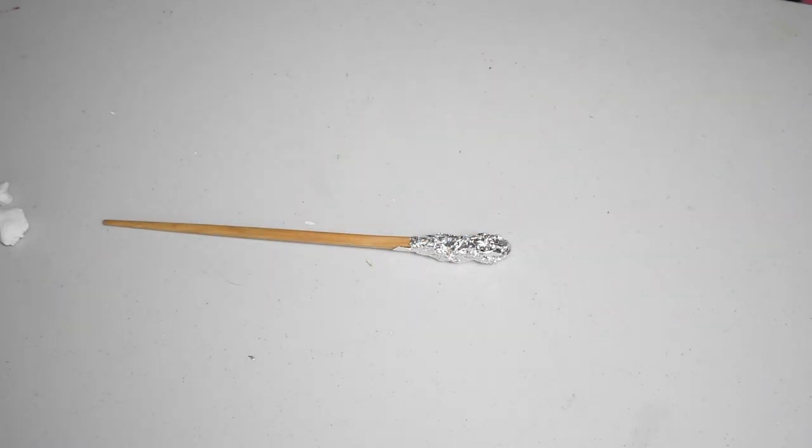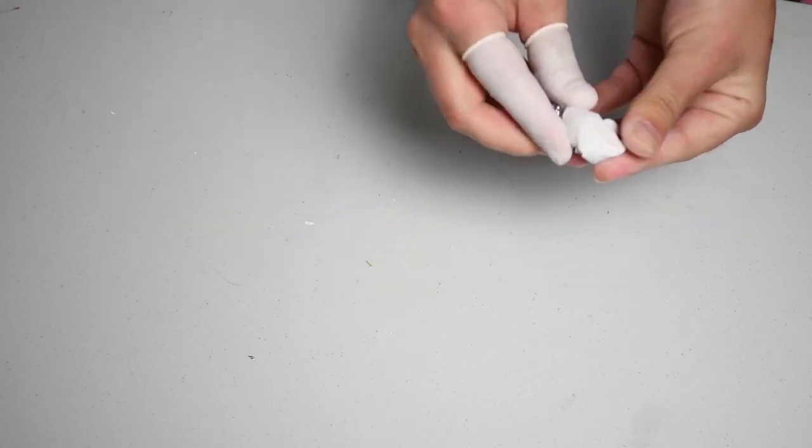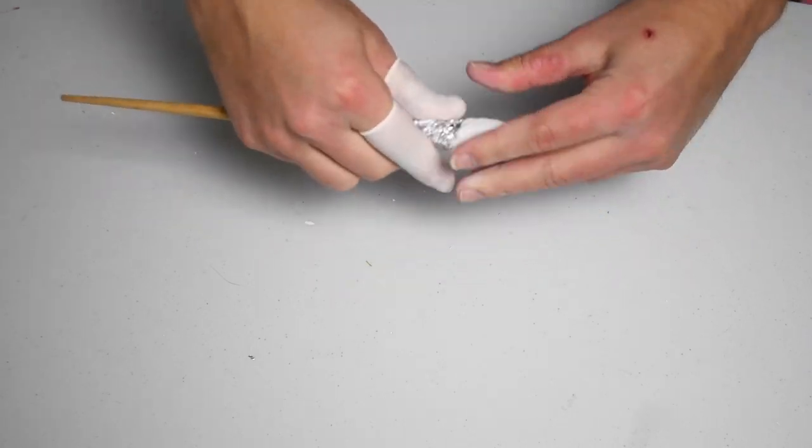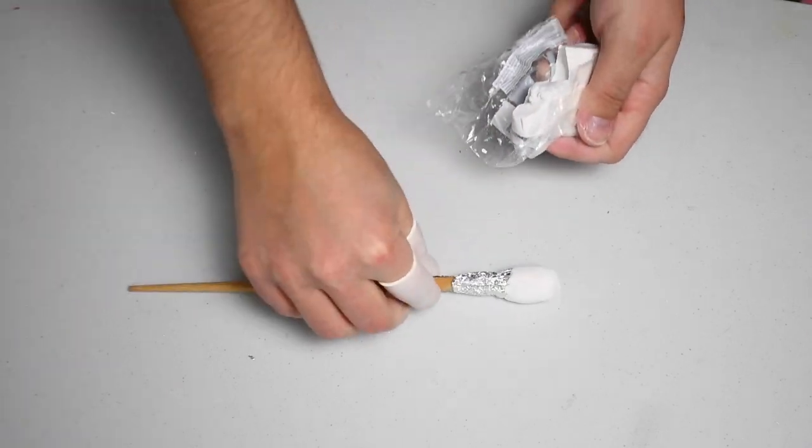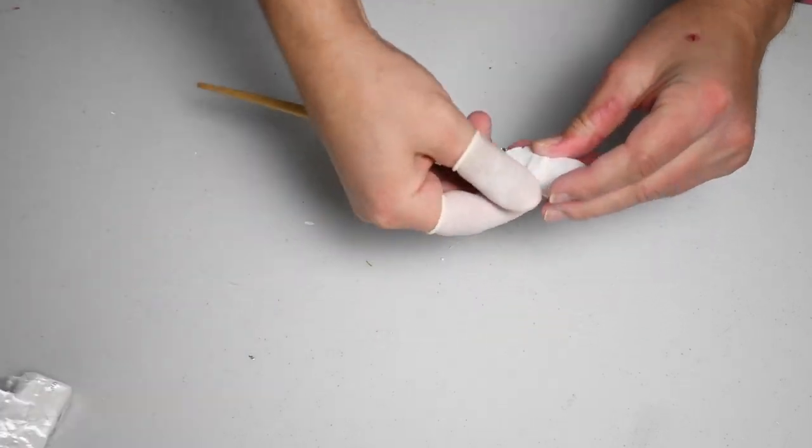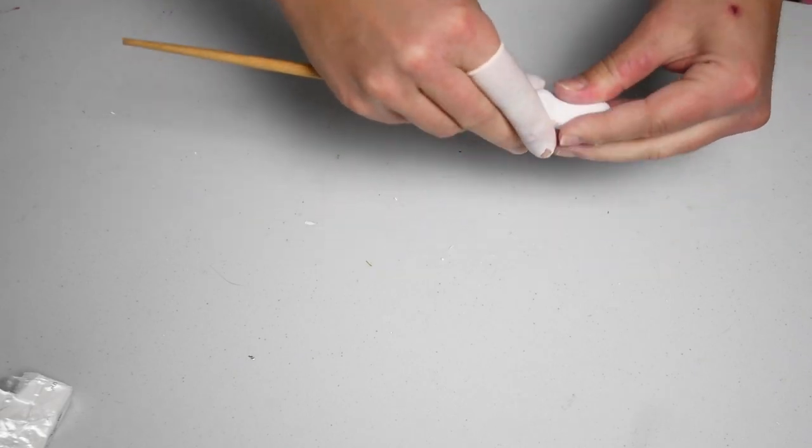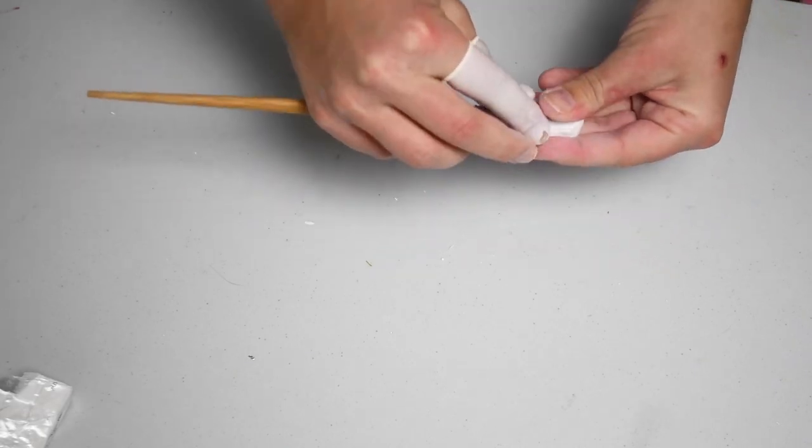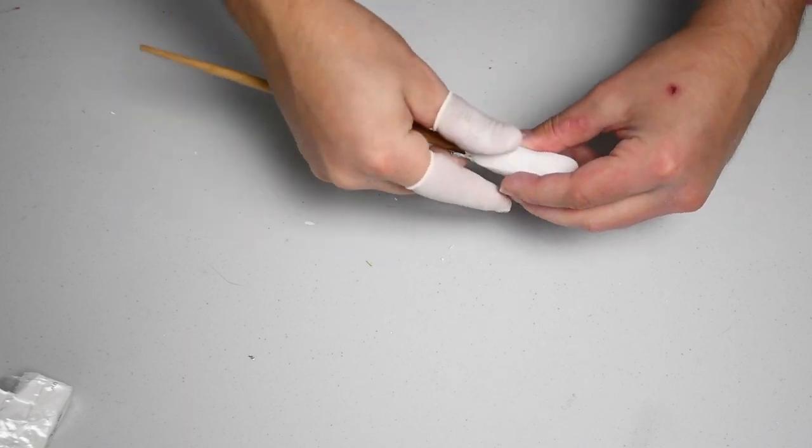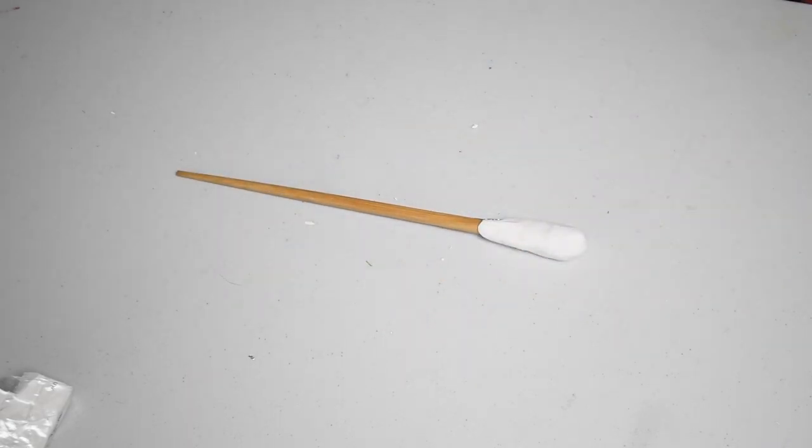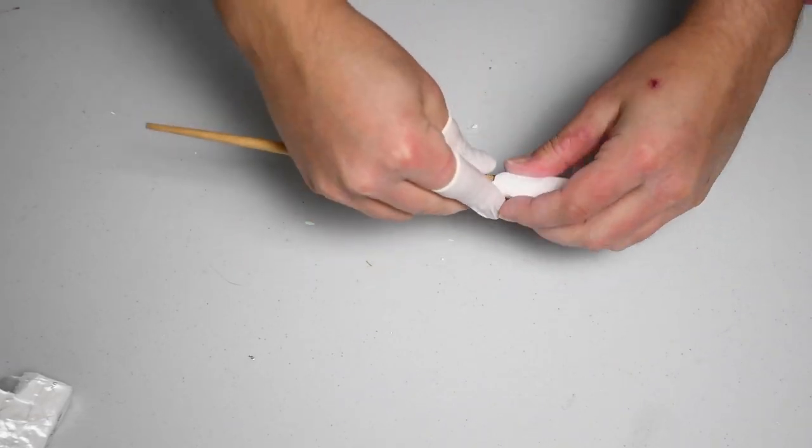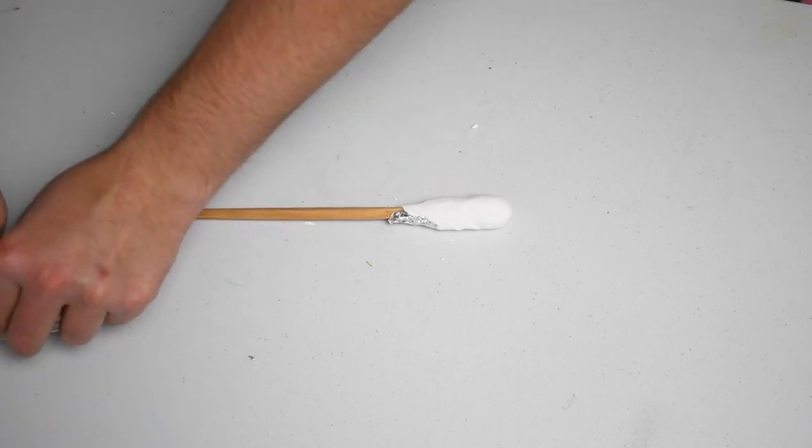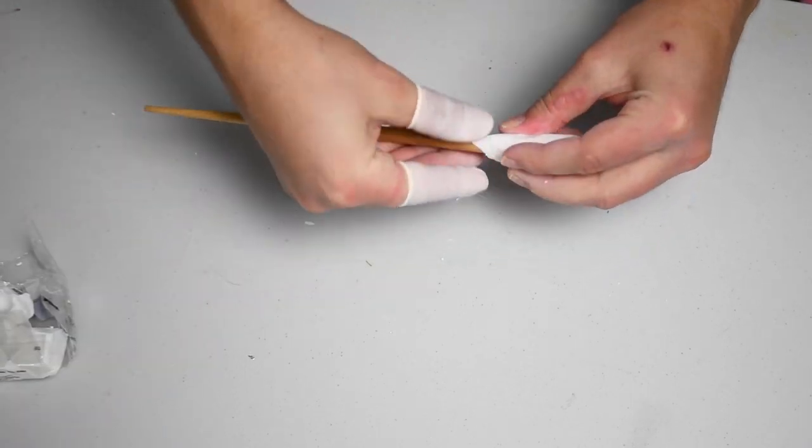And then I put on these finger covers onto my fingers to help prevent fingerprinting on the top of the wand. And essentially you just cover up the tin foil with Sculpey white clay. Actually it can be any color of Sculpey because we're going to be spray painting over this. But I just had a fair amount of white so I decided to go with that color.